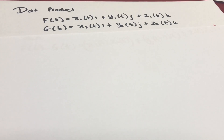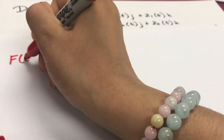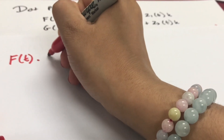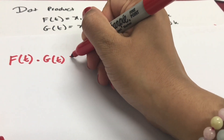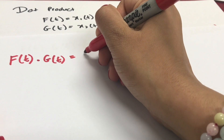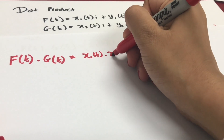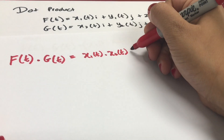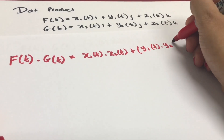The dot product of vector f of t and g of t is the sum of the multiplication of the component functions that belong to the same axis. So we get f of t dot g of t equals x1(t) multiplied by x2(t) plus y1(t) multiplied by y2(t).